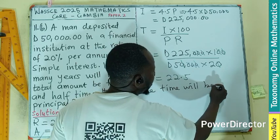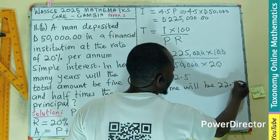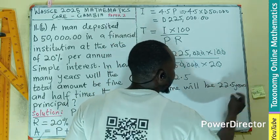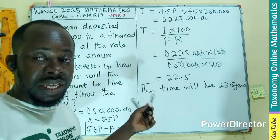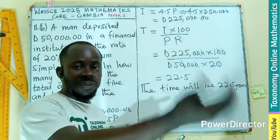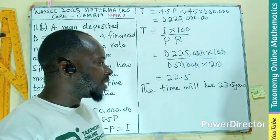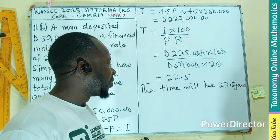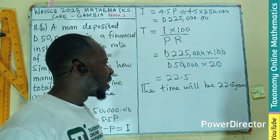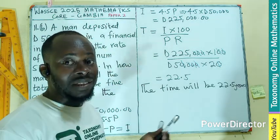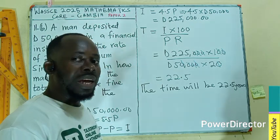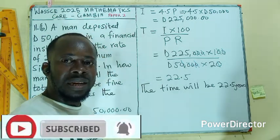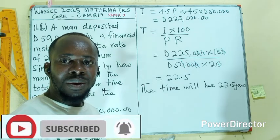We can also convert the 0.5 — that is half a year — into months, which is 6 months. So the final answer is 22 years and 6 months. The concept is clear — like, share, comment, and subscribe for more.